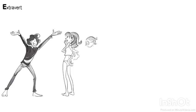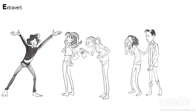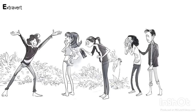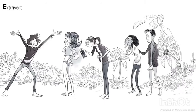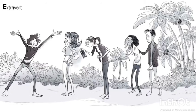Extrovert Emil is thrilled because they all survived. He feels a strong need to talk and share his happiness. He gathers everyone to celebrate their survival and to tell them about his plan to explore the island together.